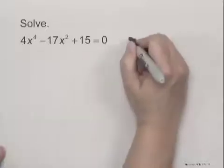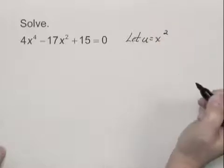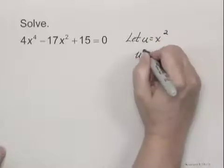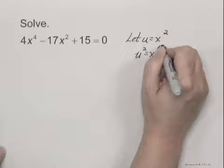We are going to let u equal x squared. Then u squared would be x squared squared, or x to the 4th.